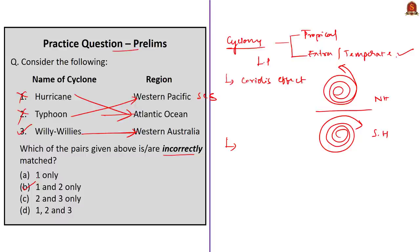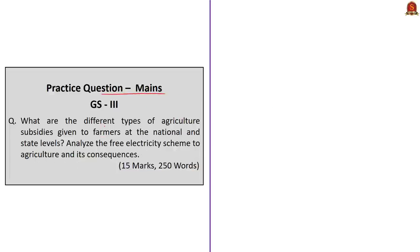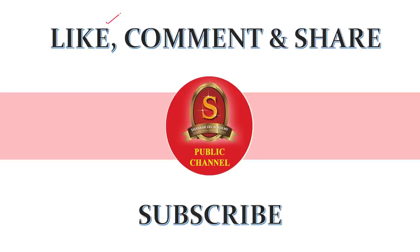Here is a practice mains question: What are the reformative steps taken by the government providing freedom to farmers for marketing their produce at a place and price of their choice? This is a 15-mark question to be answered in 250 words. We request you to post your written answers in the comment section and we will give suitable feedback within a reasonable time frame. If you enjoyed this session, please like, share, comment, and subscribe to Shankar IAS Academy YouTube channel for more updates on civil services examination. Thank you.